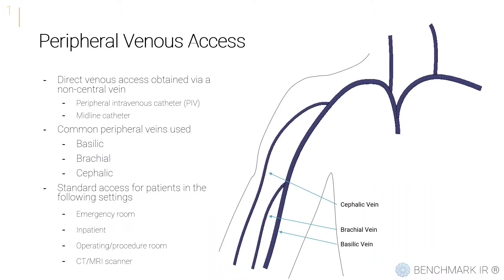To kick this off, we'll talk about peripheral venous access. By definition, this is direct venous access obtained via a non-central vein. A non-central vein is typically defined as a vein in close proximity to the heart — so the SVC, the IVC, the brachiocephalic veins, iliac veins, femoral veins, jugular veins, for example.